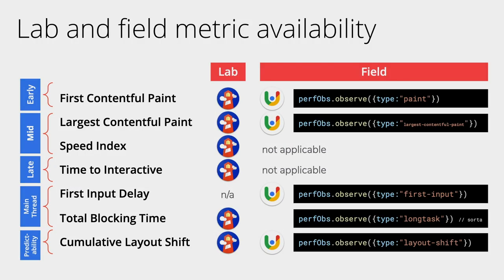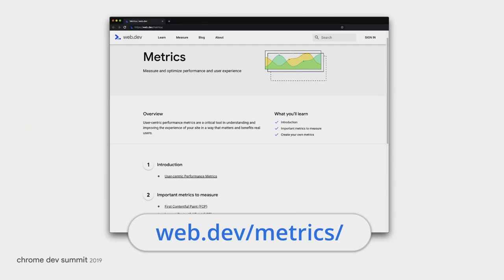Pretty much all the lab metrics are available in Lighthouse. First input delay only really makes sense in the field. When it comes to field metrics, you can see most of them are available in Chrome UX report. Others you can collect yourself with a performance observer, and you can check out the documentation for all this at web.dev/metrics.